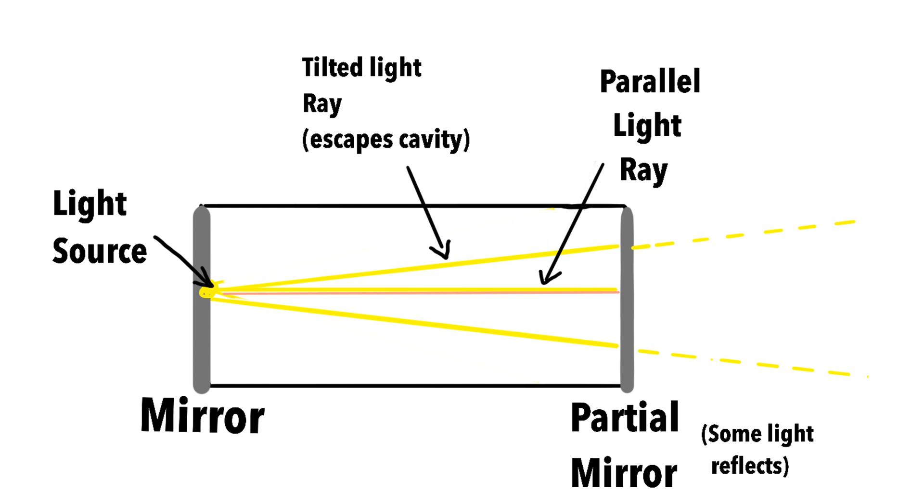There is a light source and on the two sides, there are two different types of mirrors. On one side, there is a regular mirror and on the other side, there is a partial mirror in which some light goes through and some light reflects off.